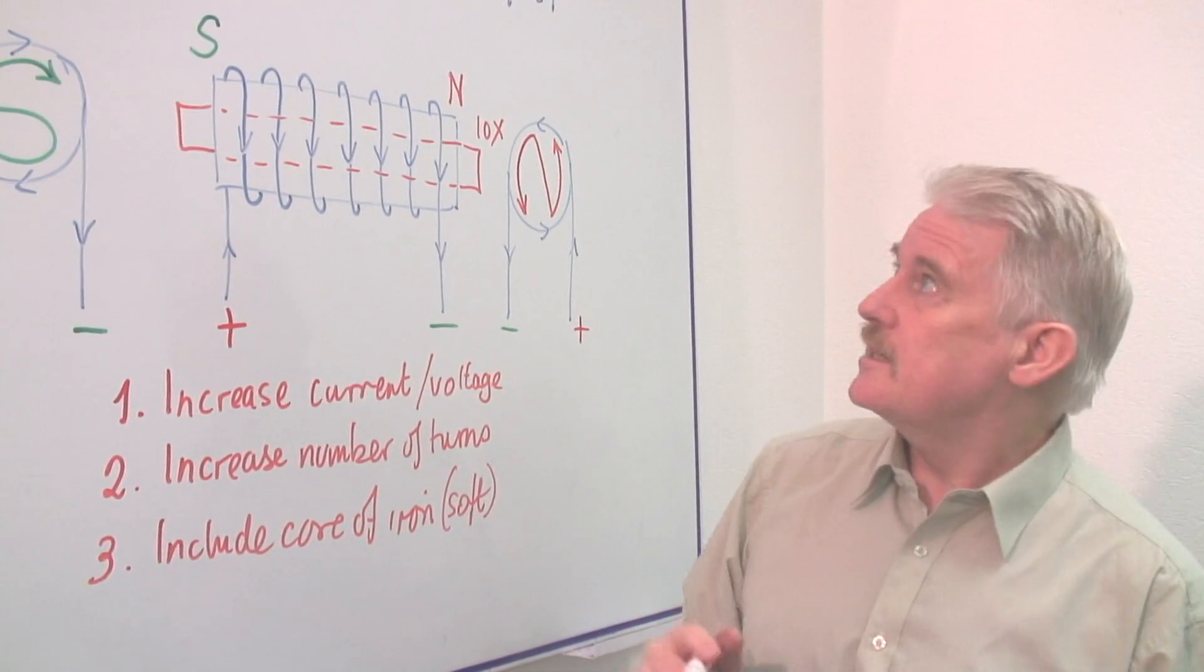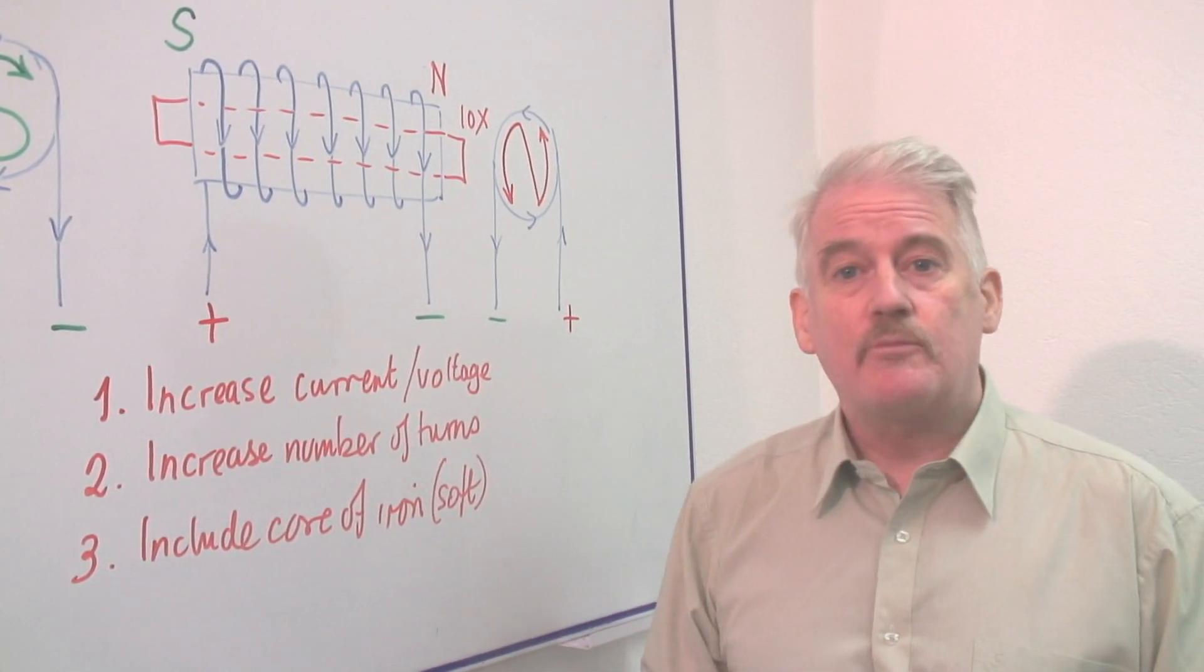So those are the three basic ways to increase the strength of an electromagnet.